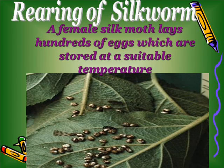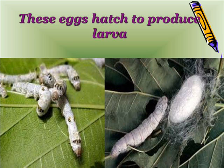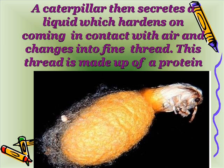Rearing of Silkworm: A female silkworm lays hundreds of eggs, which are stored at a suitable temperature. The eggs hatch to produce larvae. The larvae are kept in clean boxes where they feed on fresh mulberry leaves for 20 to 30 days. A caterpillar then secretes a liquid which hardens on coming in contact with the air and changes into fine thread.